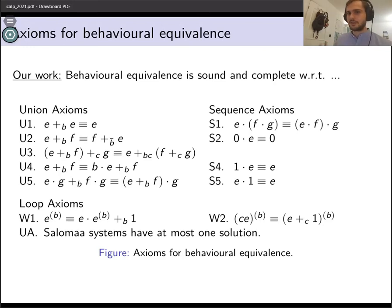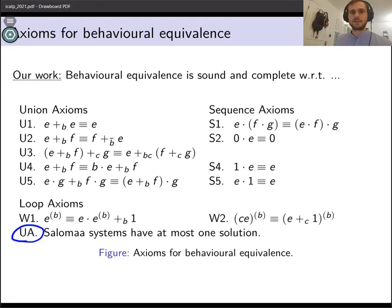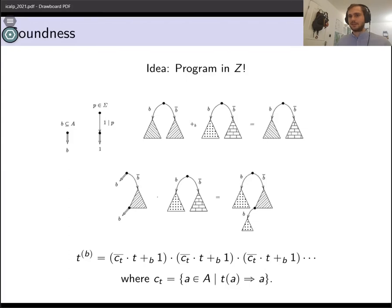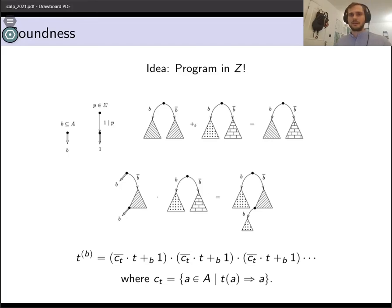I want to take some time to talk about how exactly the soundness and completeness proofs work for behavioral equivalence — that's where all the fun math happens. The idea behind the soundness theorem is kind of neat: basically we can interpret the GCAT operations in the set of behaviors Z itself. We can program in Z, and this turns the set of behaviors into an algebra with the same signature as the GCAT expressions. It's noteworthy that the actual space of behaviors is quite large — it's uncountable, much larger than the set of GCAT expressions — which immediately tells us that not every behavior corresponds to an expression.